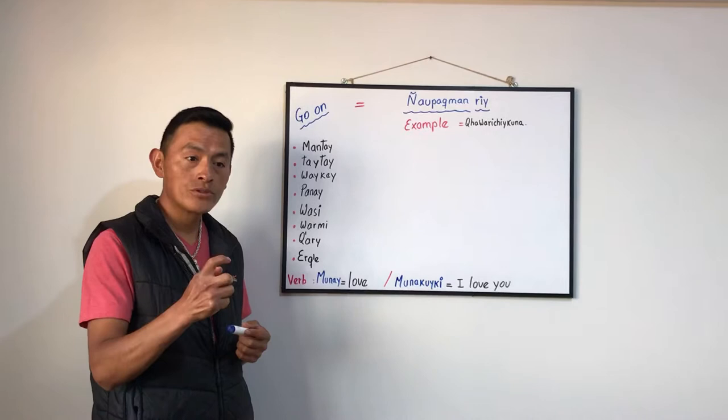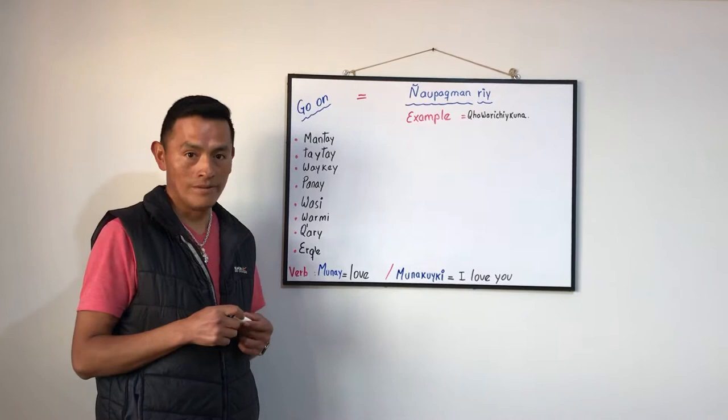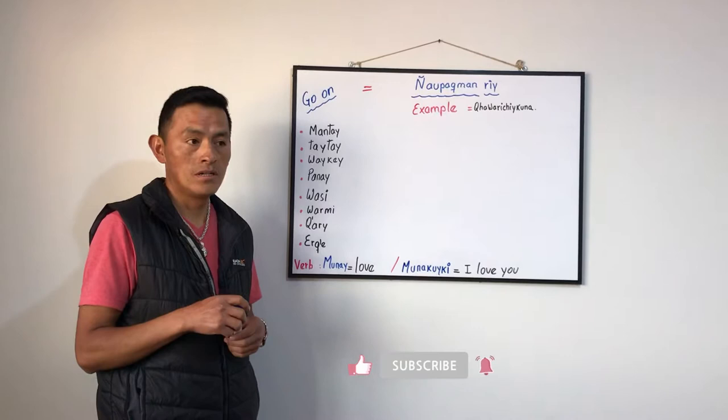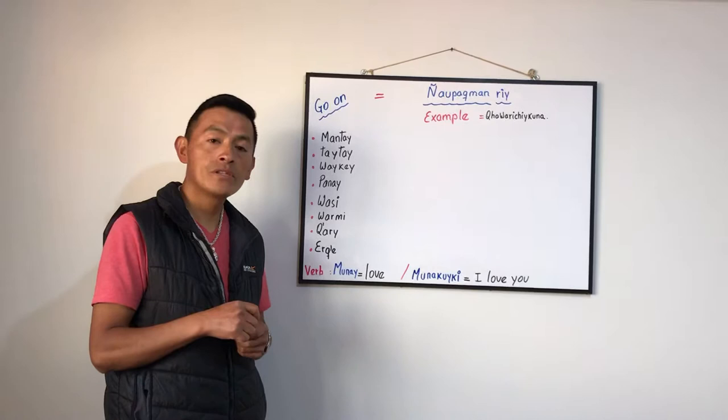Quechua language doesn't have a writing system. Nowadays we use the Gregorian alphabet to write Quechua words. Quechua has more than 2,000 years of history.